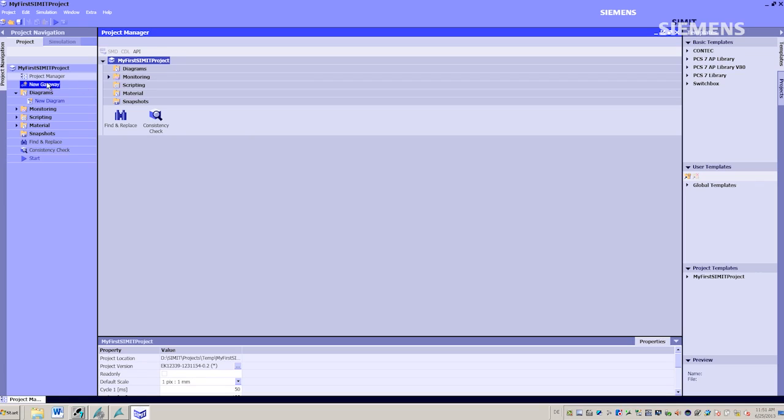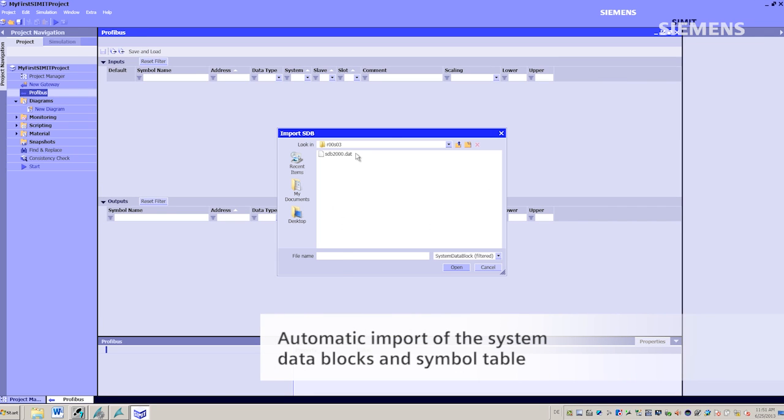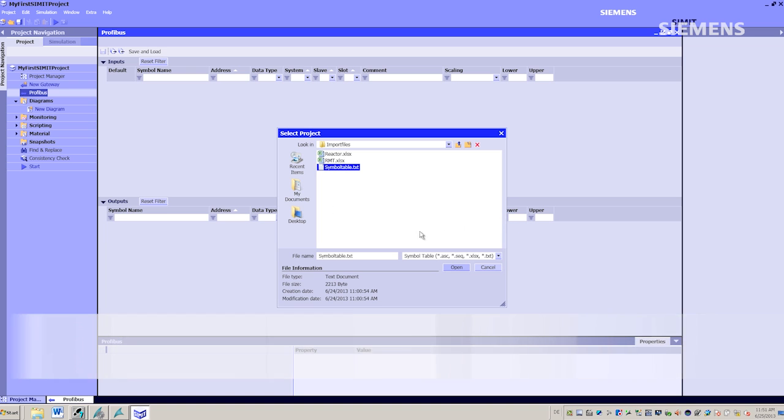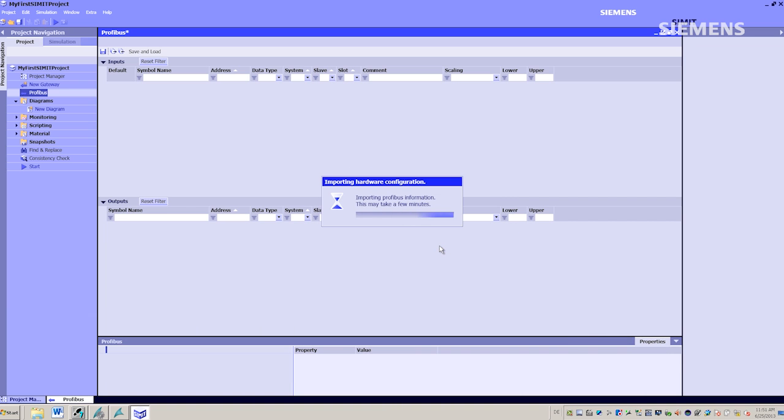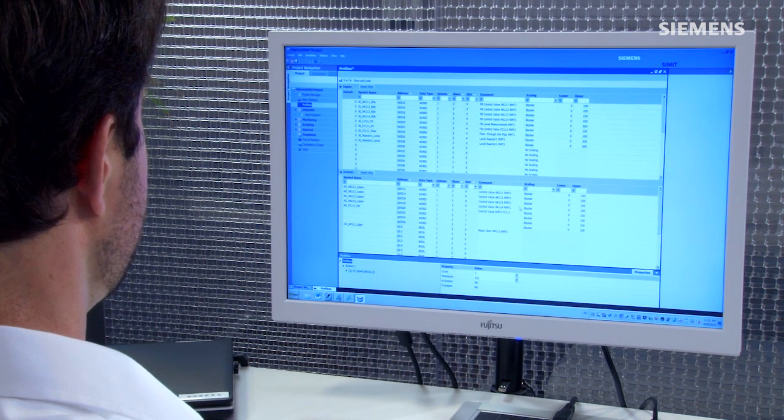I'll start by creating a new PROFIBUS DP coupling. I will then import the system data blocks and the symbol table. All symbolic names and signals are now defined, which is sufficient for simulation at the signal level.